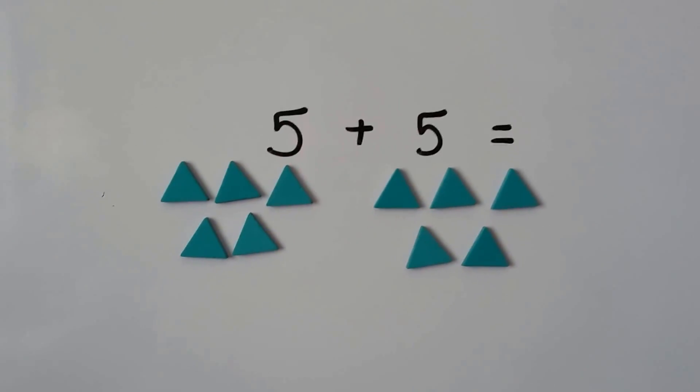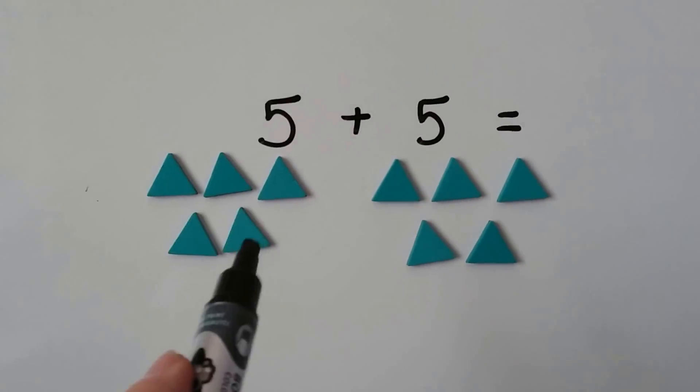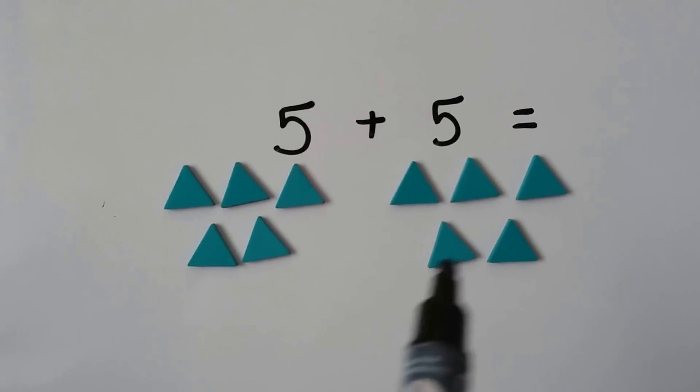Double fives. That's five plus five. We have five, six, seven, eight, nine, ten.